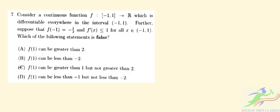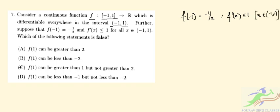Question 7. Consider a continuous function F on the closed interval minus 1 to 1 onto the reals, which is differentiable everywhere in the open interval minus 1 to 1. Further suppose that F of minus 1 is given as minus half, and F prime of x is less than or equal to 1 for all x in the interval minus 1 to 1. We have to find which of the following statements is false.